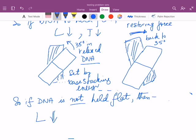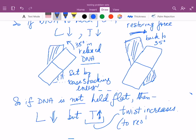Then L decreases because the polymerase is actively unwinding the DNA. But T would then increase. So twist increases. And it increases to restore 35 degree stacking angle.